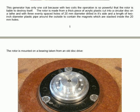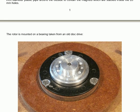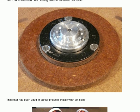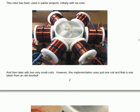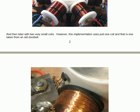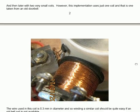The rotor is mounted on a bearing taken from an old disc drive. That is the bearing there and it is very effective. The rotor has been used in earlier projects, initially with six coils. There is the rotor and the six coils are mounted around it. Later it was used with two very small coils turned sideways. However, this implementation uses just one coil and that is a coil taken from an old doorbell.